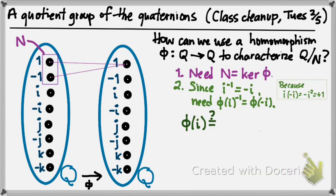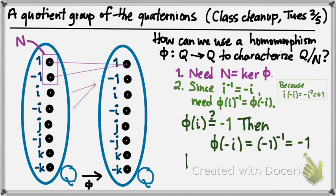So maybe we try something else — sending i somewhere different. What if we try sending i to -1? Then -i would have to go to the inverse of -1, which is also -1. So far this looks okay: we send both i and -i to the same place, -1. And because -1 is its own inverse, that is fine according to the homomorphism law.